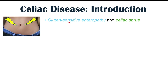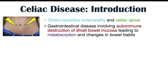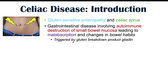Celiac disease is also known as gluten-sensitive enteropathy and celiac sprue. It is a gastrointestinal disease involving autoimmune destruction of the small bowel mucosa — that's the inner lining of the small intestine — leading to malabsorption and changes in bowel habits. This inflammation is triggered by a gluten breakdown product known as gliadin, and the proximal small intestine is most commonly affected, which is where certain nutrients are absorbed.